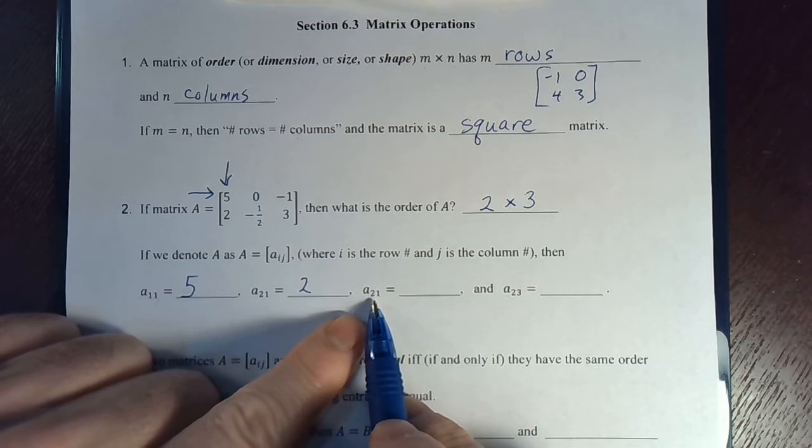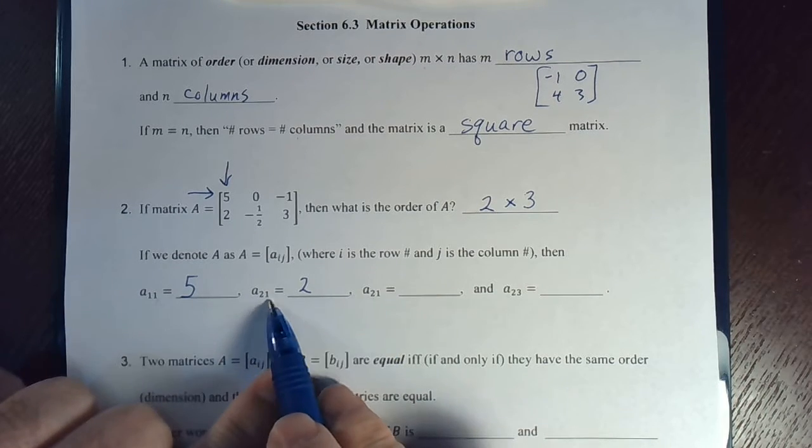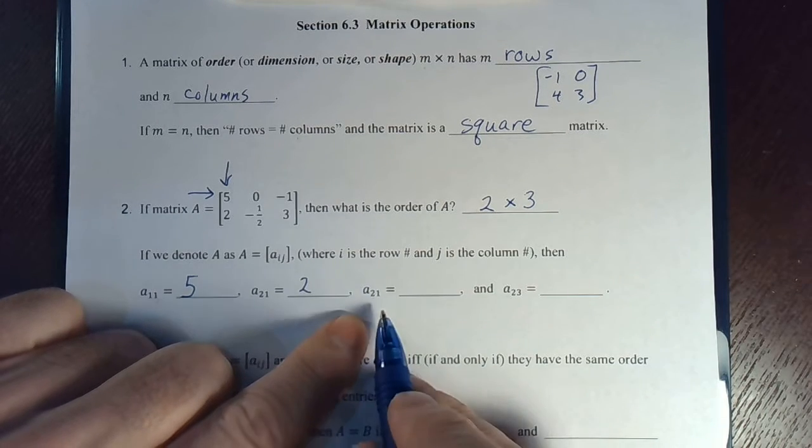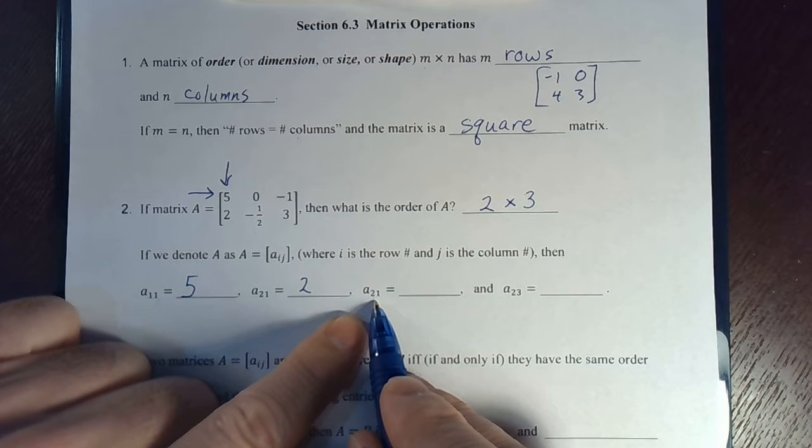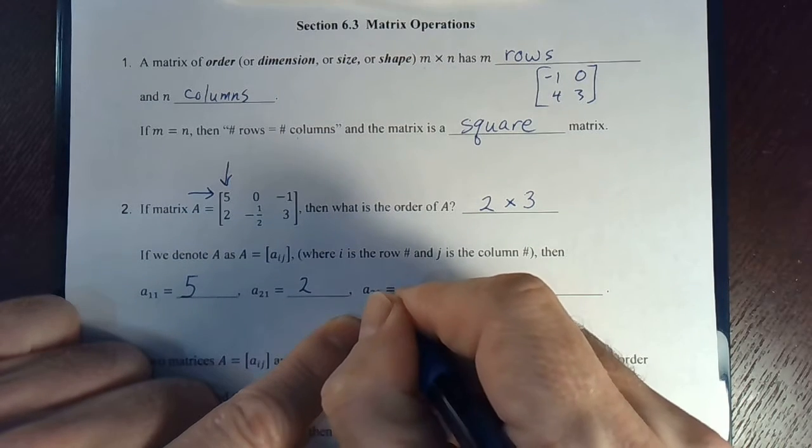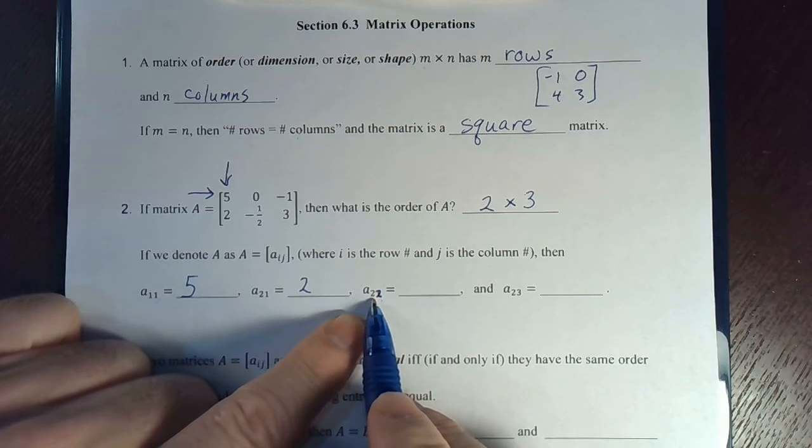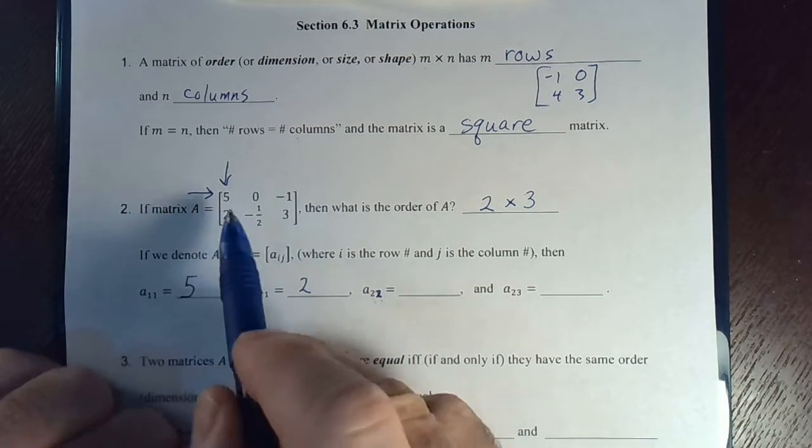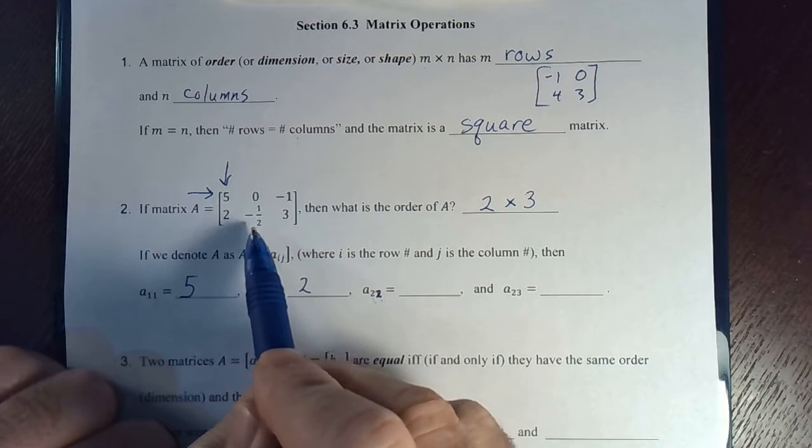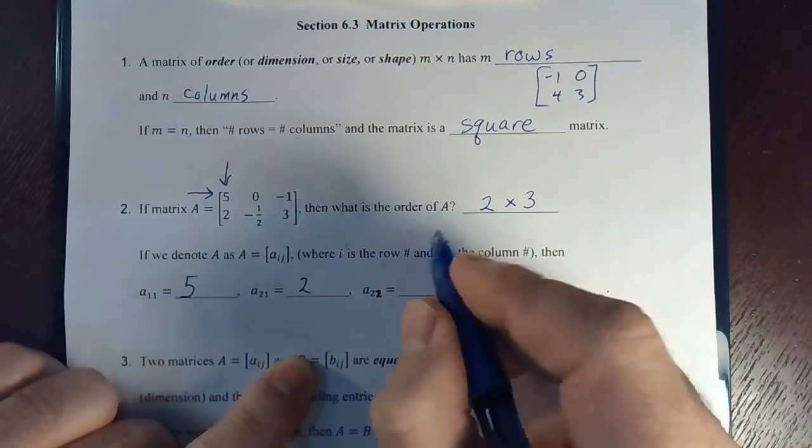Now, A two one. Remember, order matters here. Row two. Oops. This is exactly the same as this one. So, let me change that to two, two. A two two means row two, column two. Row two, the second row, and the second column is this one. So, it would be negative one-half.